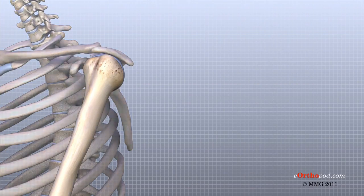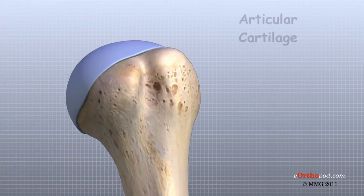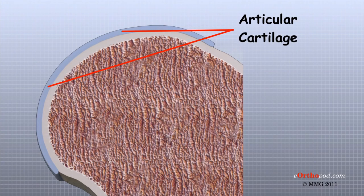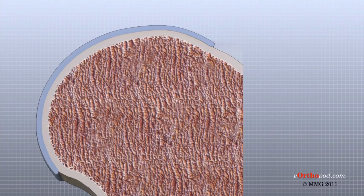Articular cartilage is the material that covers the ends of the bones of any synovial joint. It is about one quarter of an inch thick in most large, weight-bearing joints, and a bit thinner in joints such as the shoulder, which don't normally support weight. Articular cartilage has a rubbery consistency and is very slippery, which allows the joint surfaces to slide against one another with very little friction. It functions to absorb shock and provide an extremely smooth surface to make motion easier.